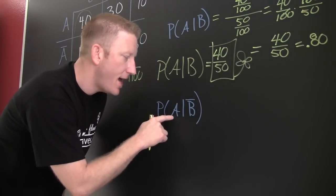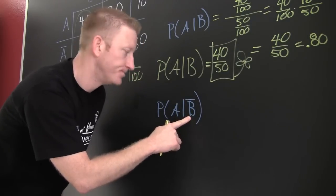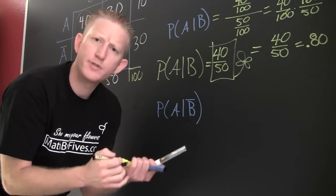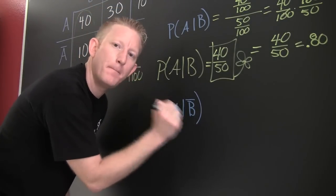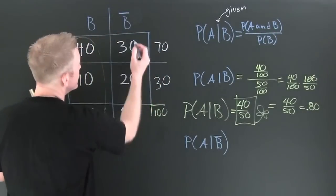I have A given not B. So what does that do? That restricts our columns to not B. So this is not B.